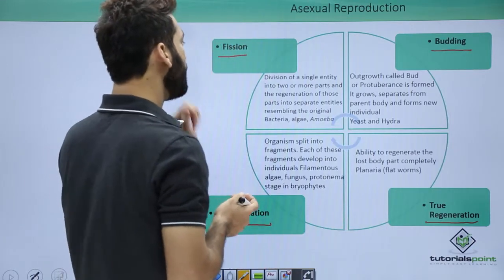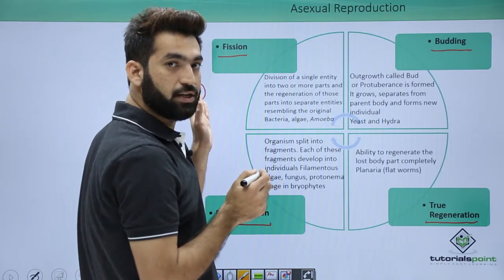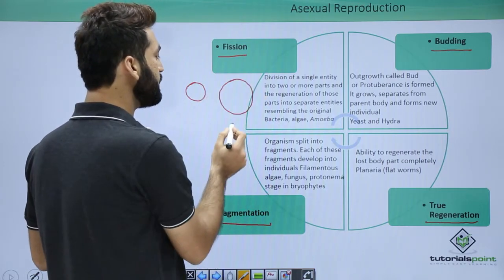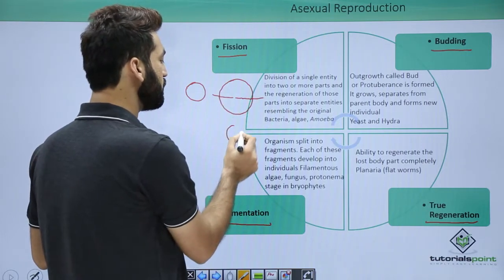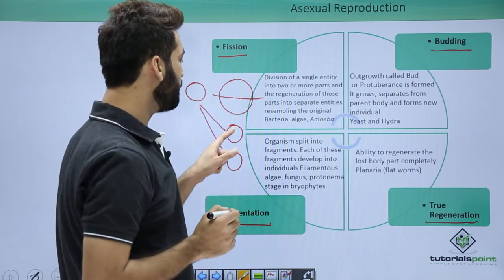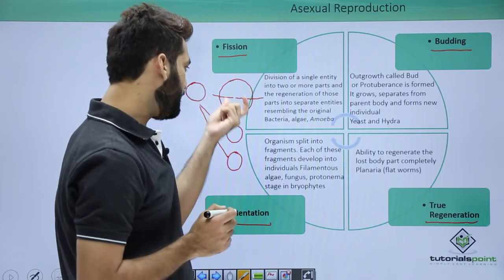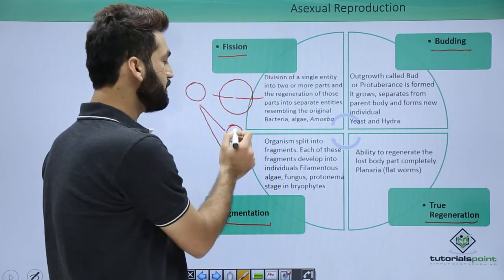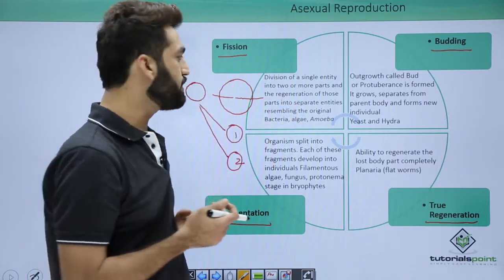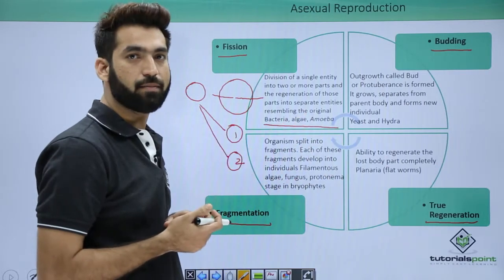One method of asexual reproduction is fission. The organism, which is unicellular, first grows in size and then divides into two organisms. Fission results in two daughter cells of equal sizes. This is binary fission — one cell dividing into two — but multiple fission also occurs where one cell divides into many cells. Examples include bacteria, algae, and amoeba.